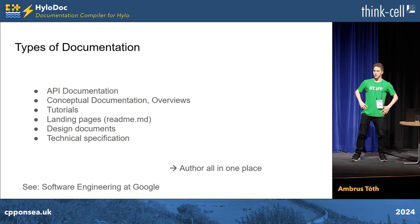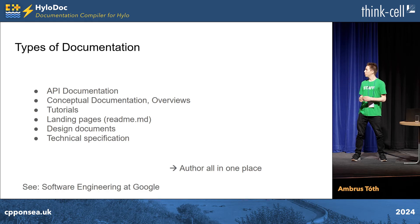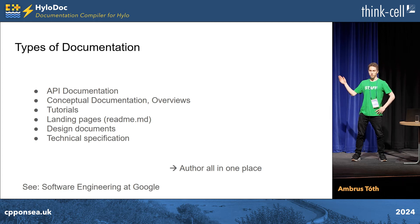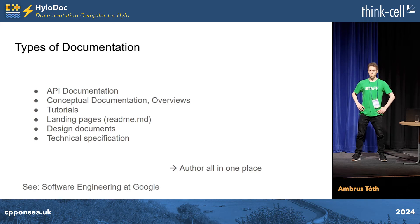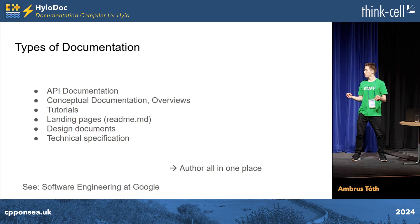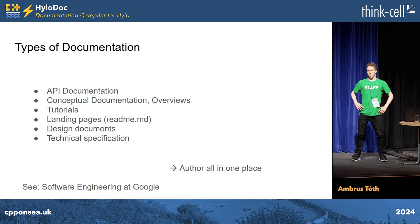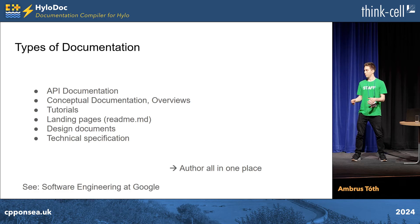Types of documentation include API documentation — documenting a particular symbol or module — and conceptual documentation where you can write overviews, tutorials, and landing pages such as READMEs inside folders. There are also design documents, usually on collaborative platforms like Google Docs, and technical specifications, which can be a result of a design document and stored inside source control.